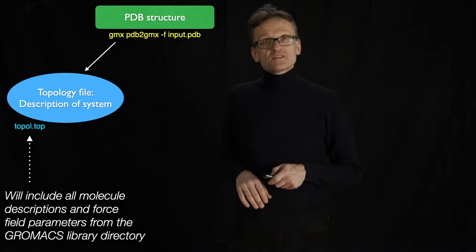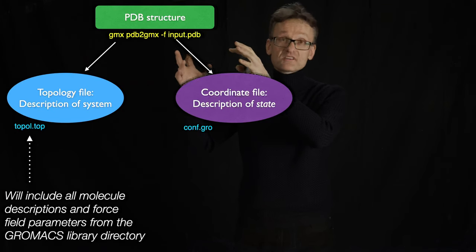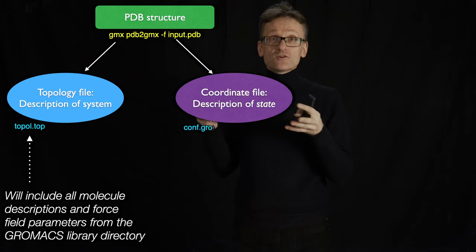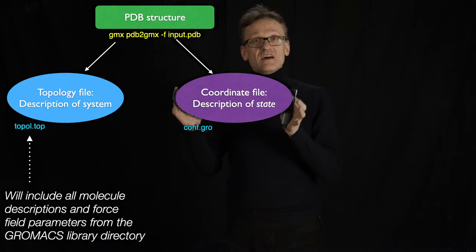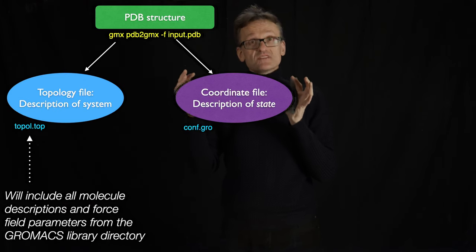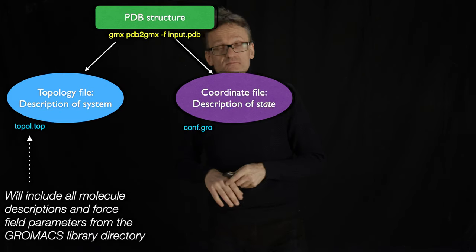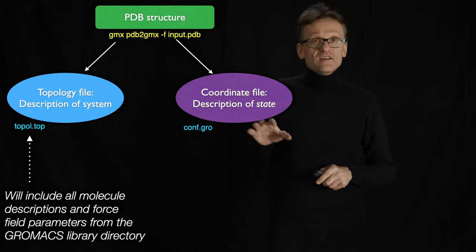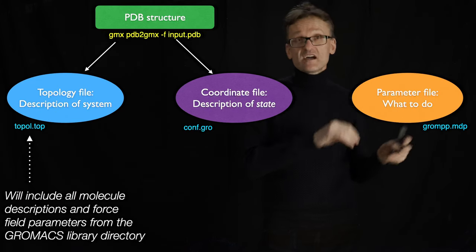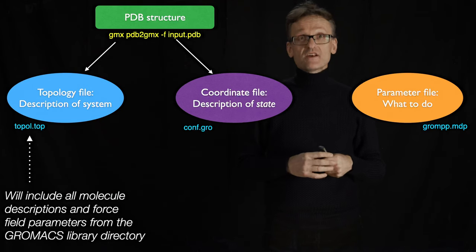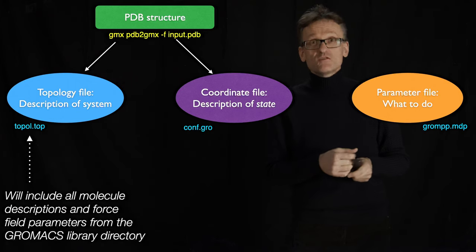The other part contains things that will typically change during a simulation: the specific starting coordinates. We assign a set of velocities from the Maxwell-Boltzmann distribution corresponding to, say, 300 Kelvin. It makes sense to keep this separate because if I repeat the simulation 100 times, this part is constant while the other varies. In addition, you have to tell the program what you want to do — some sort of parameter file specifying whether to run a simulation, an energy minimization, or a free energy calculation. It's a relatively short text file.